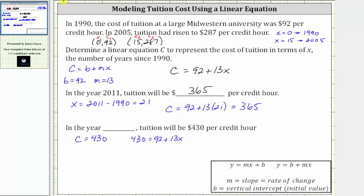Substituting 430 for C, we have 430 equals 92 plus 13x. We first isolate 13x by subtracting 92 on both sides. Simplifying, 92 minus 92 is zero, so we have 13x equals 430 minus 92, which equals 338.